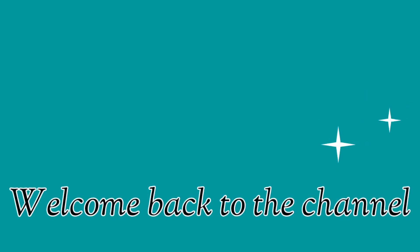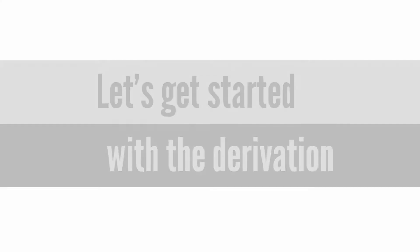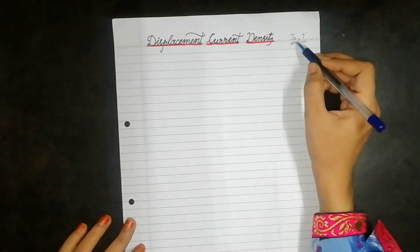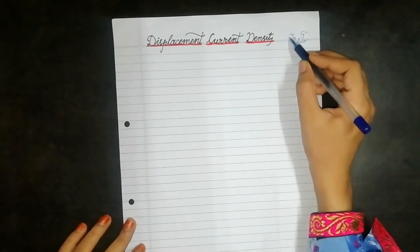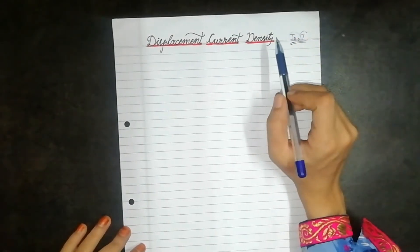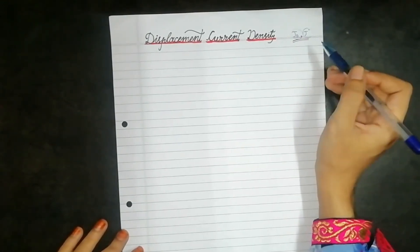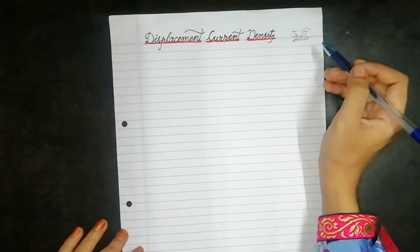Hello everyone, welcome back to the channel. Today in this video we will study the displacement current density derivation. The displacement current density is denoted as J_d or sometimes as J prime — these are the two notations used for displacement current density. In order to find the value of displacement current density there are a couple of steps that we need to follow, so first of all we will start from Ampere's circuital law.